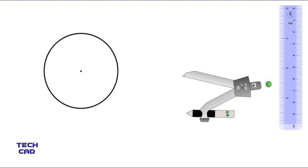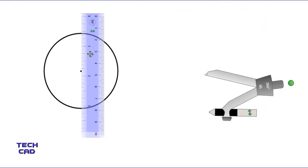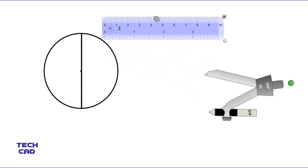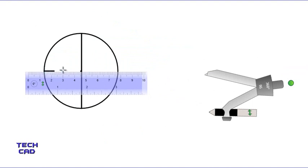Now take away your compass and put your scale towards your center and make a diameter line over here — this is the way to make a diameter line. Then rotate your scale, put it towards the center again, and make another diameter line like this. Now take away your scale.